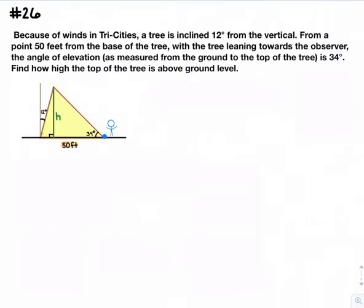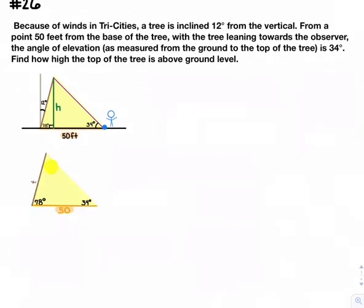Number 26: A tree is leaning 12 degrees. We want to find H. Since this angle is 90 degrees, we know this angle is 78 degrees. Let's take a closer look at the yellow triangle.